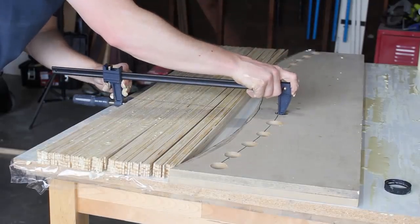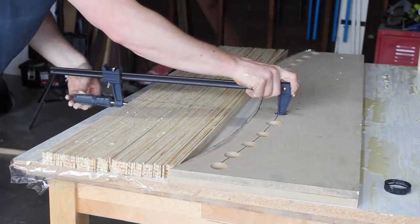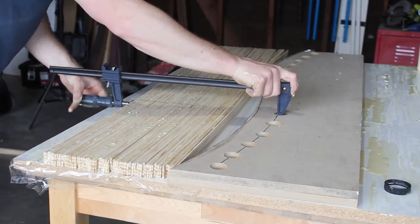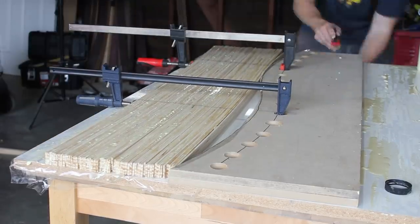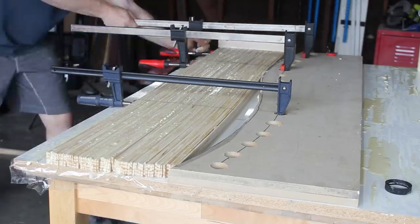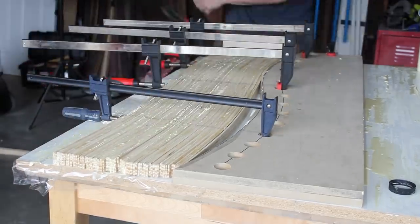To do this all at once, I used a slow setting Titebond glue that had a 45 minute cure time, which made it a lot easier and a lot less stressful. And I think I did the entire glue up and clamping in 34 minutes.